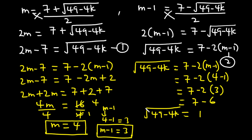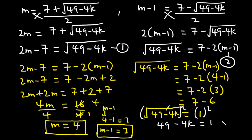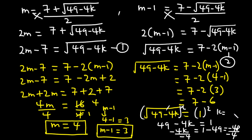To eliminate the square root, let's square both sides: 49 minus 4K equals 1. Transposing 49: negative 4K equals 1 minus 49 equals negative 48. Dividing both sides by 4, K equals 12. So the value of K is 12, and the quadratic equation becomes x squared minus 7x plus 12.